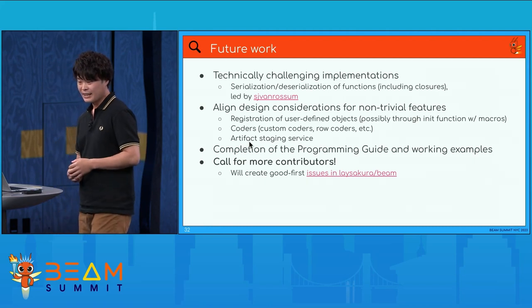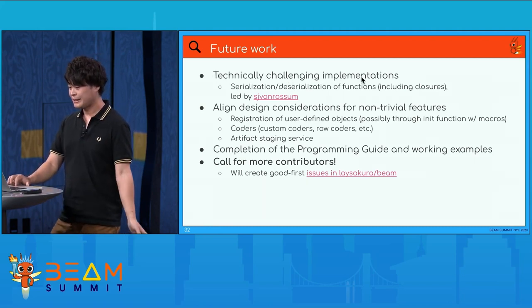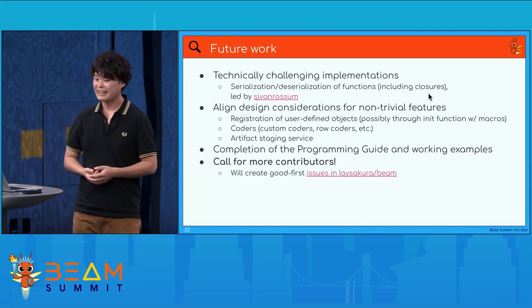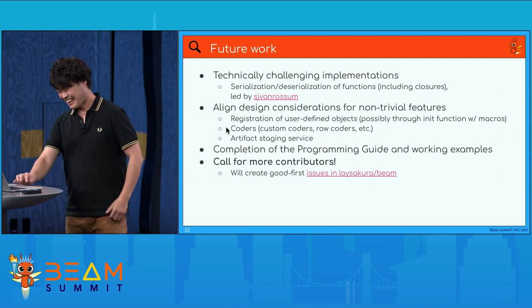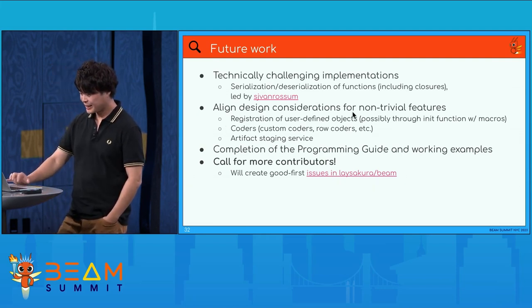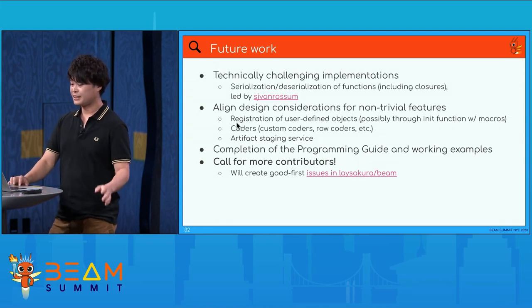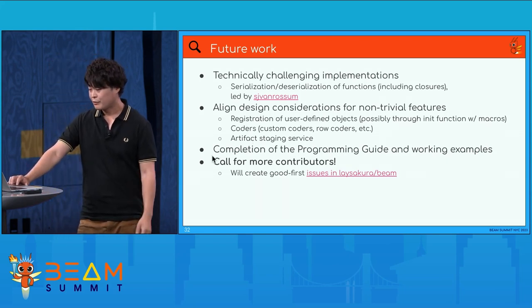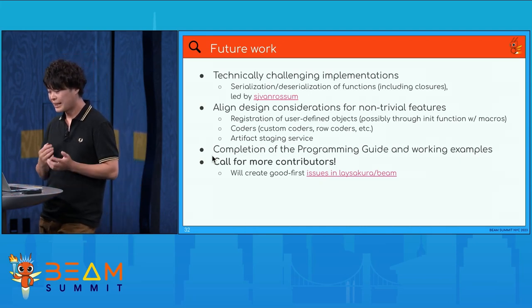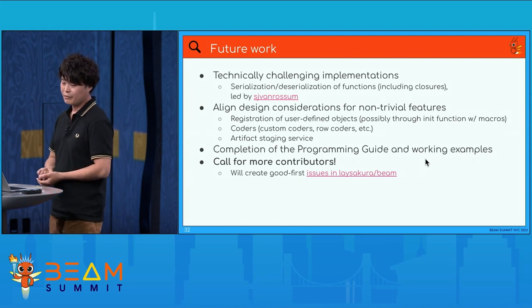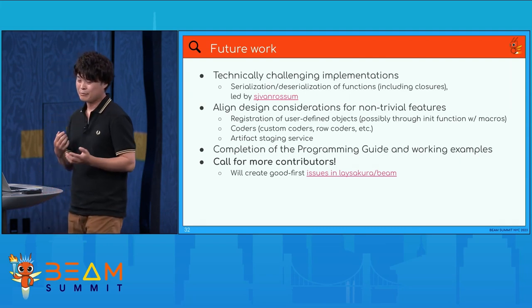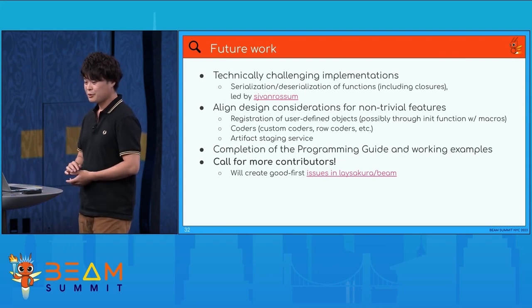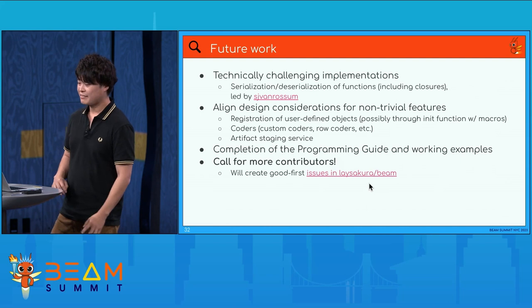We have many future work items. First, technically challenging implementation like serializing and deserializing functions and Rust closures, which is led by S.J. Vanoossen-Steve. We also need to align design considerations for non-trivial features like registration of user-defined objects, coders, and artifact staging service. We should also complete the programming guide for Rust and working examples. The most important point is: we call for more contributions to the experimental Rust SDK, and we will create good first issues in the repository after this event.